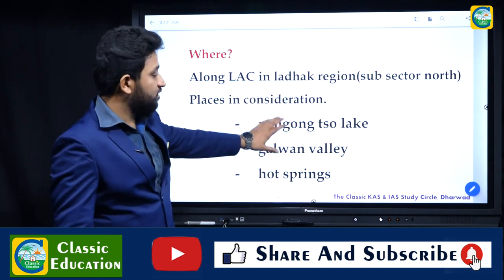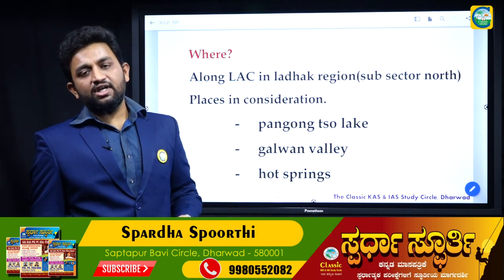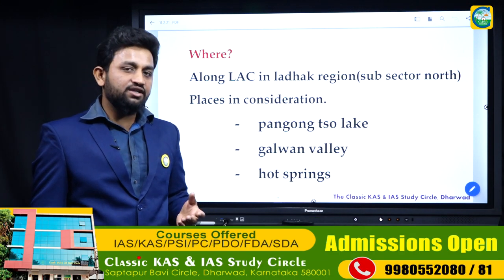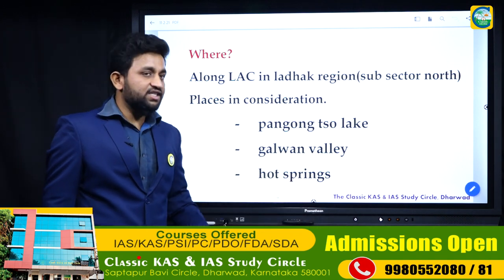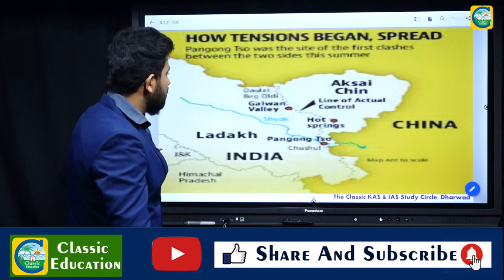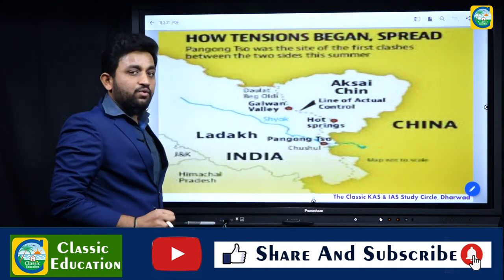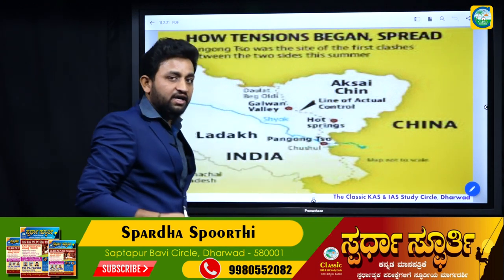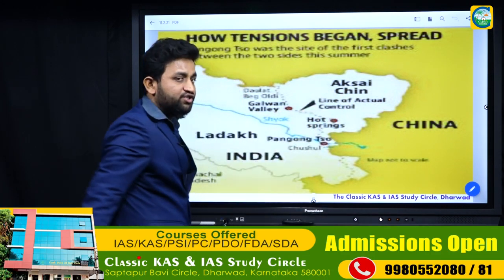In 1962, the major flashpoint was the incident in Galwan — this led to the brief war of 1962, which resulted in China's illegal occupation of Aksai Chin. Looking at the dotted line on the map, which represents the LAC demarcation, Aksai Chin is under Chinese occupation but is claimed by India.